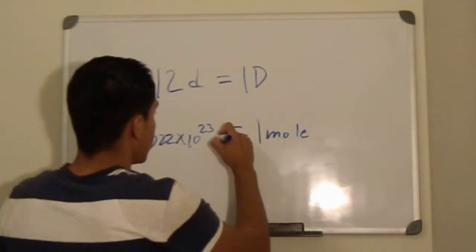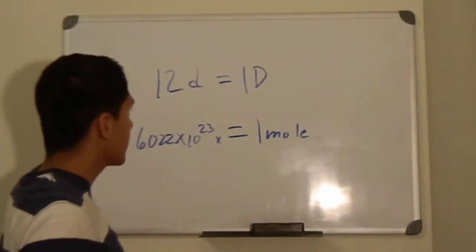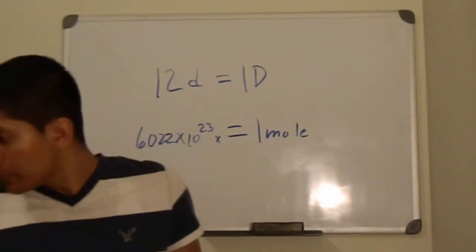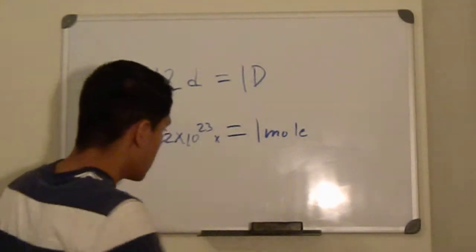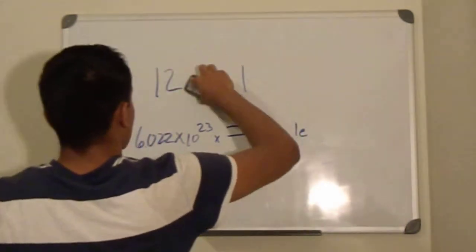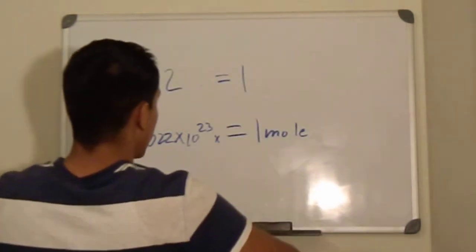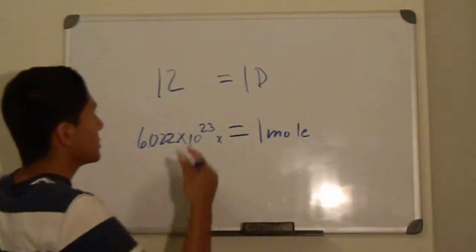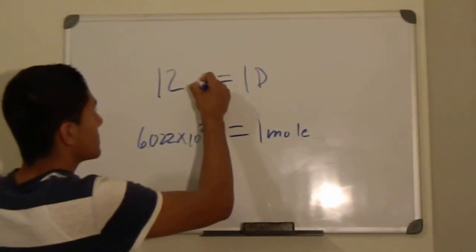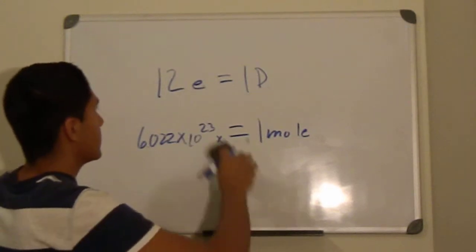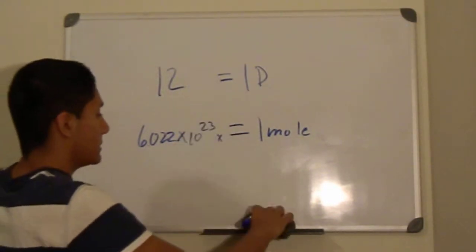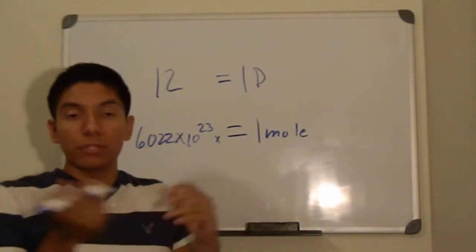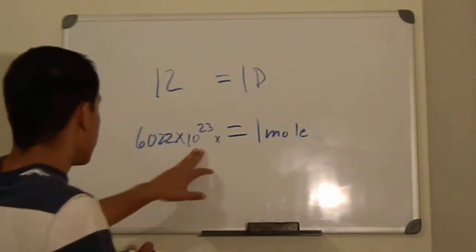So this just can be x. When you say a dozen, it doesn't have to be a dozen donuts, right? It could just be a dozen eggs, or a dozen pair of eyes, or a dozen anything. A dozen just means 12; a mole just means this number: 6.022 times 10 to the 23rd power.